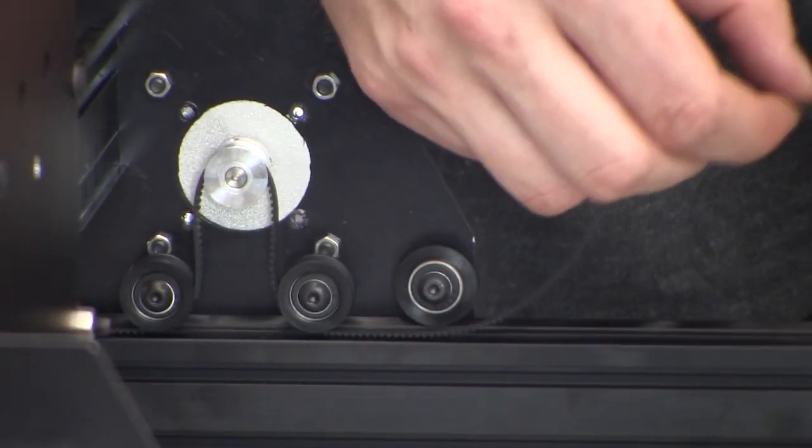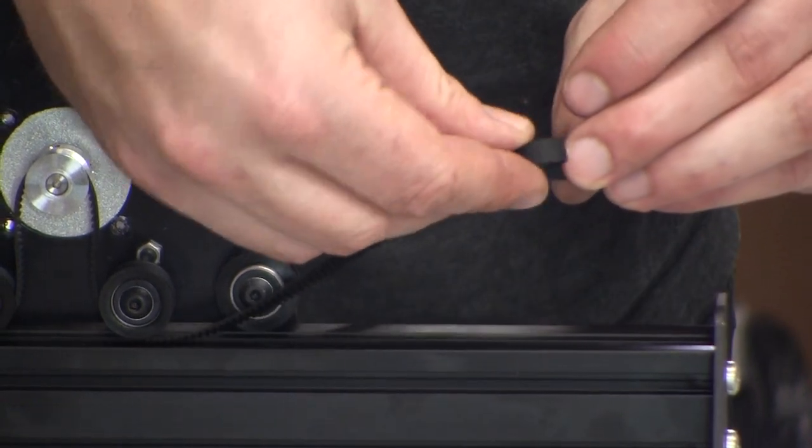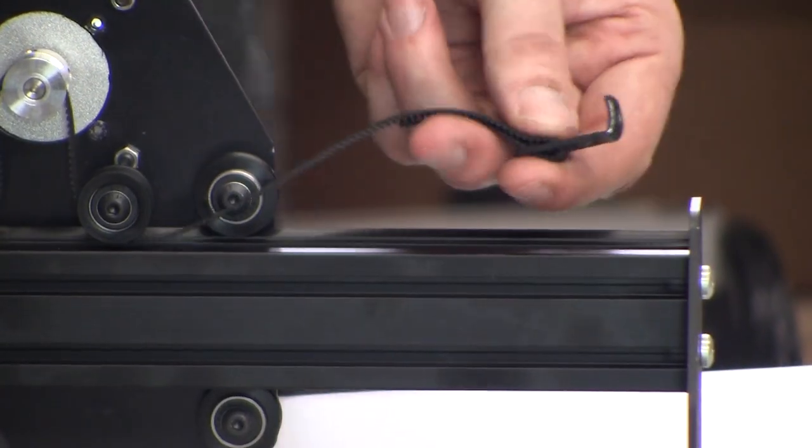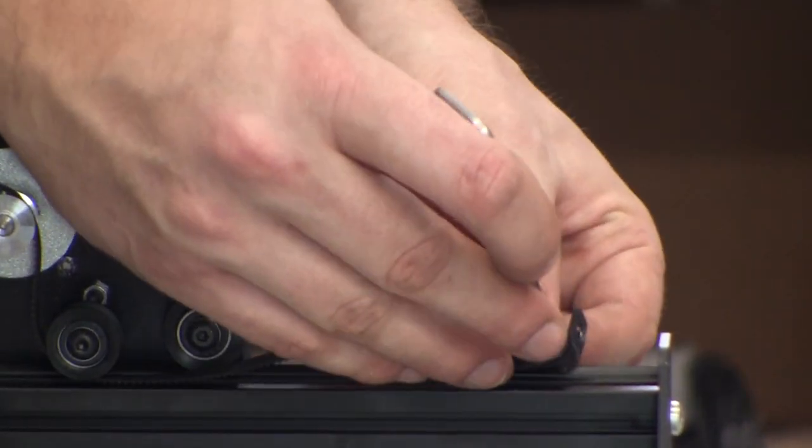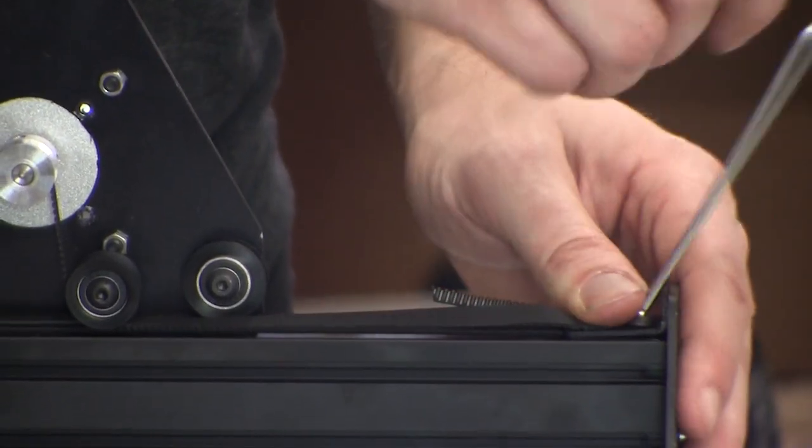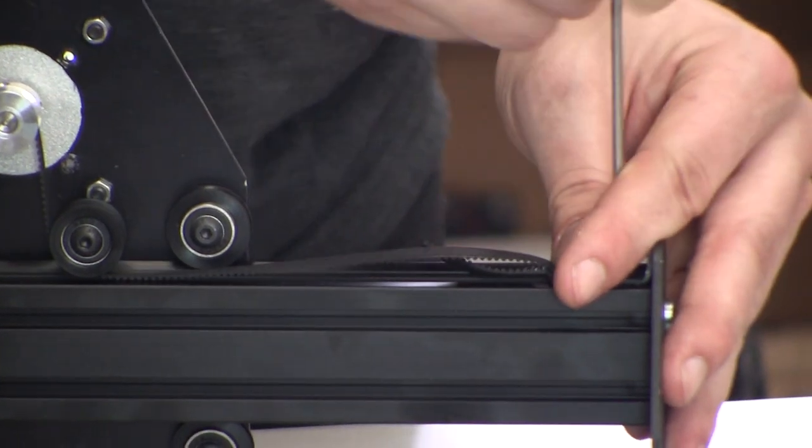And then just like before, we're going to feed the belt through the belt clip. Make sure that as many teeth as you can manage interlock with each other with the belt, and then put another small screw into one of the insertion nuts that we put into this maker slide. Snug this belt clip up with the end plate and tighten it down.